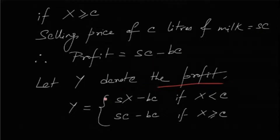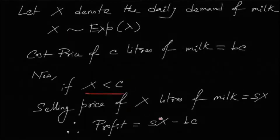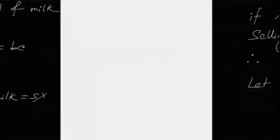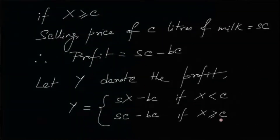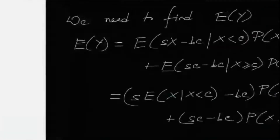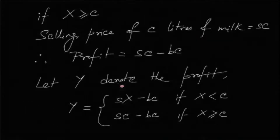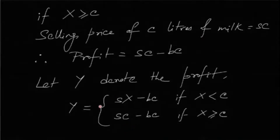Let Y denote the profit. Therefore Y equals SX minus BC if X is less than C, and Y equals SC minus BC if X is greater than or equal to C. We need to find the expected net profit of the store, that is, the expectation of Y.